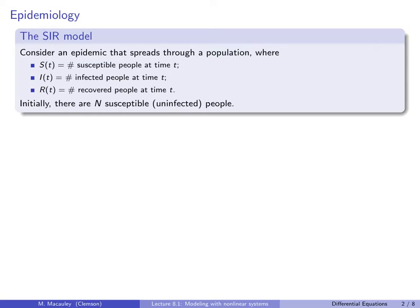Let's begin with the popular SIR model from epidemiology, which was proposed in the early 1900s. Consider an epidemic or a disease that spreads through a population, something like the common cold or the flu, or something more serious. S(t) represents the number of susceptible people at time t — those who are healthy and have not yet been infected. I(t) is the number of infected people at time t, the people who are currently sick. R(t) represents the number of recovered people at time t — those who have gotten the disease and now have immunity. Finally, let's assume that there are N susceptible or unaffected people initially.